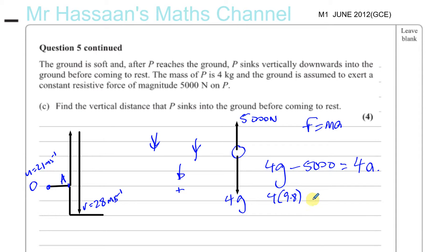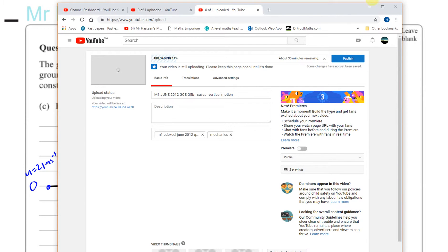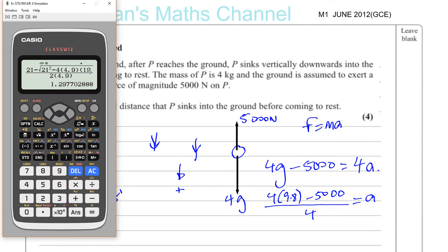So, 4 times 9.8, minus 5,000, divided by 4, will tell me the acceleration that this particle is subjected to. So we need to find the acceleration of the particle. We've got 4 times 9.8, minus 5,000, divided by 4.